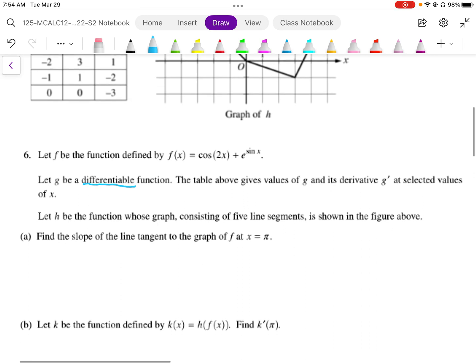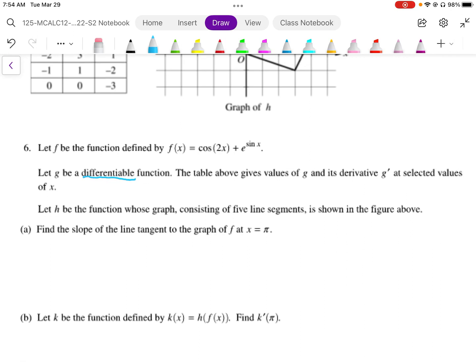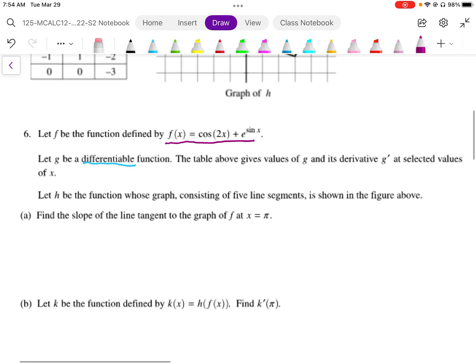So part A says find the slope of the tangent line of F at X equals pi. Well to find the tangent line of F we need to take the F graph and we need to differentiate it.